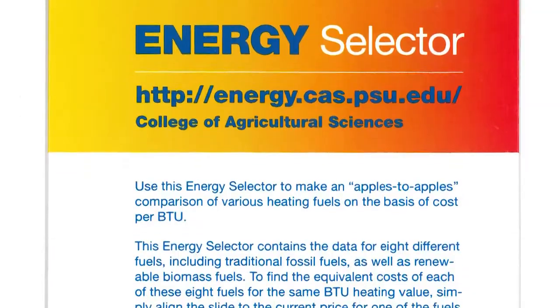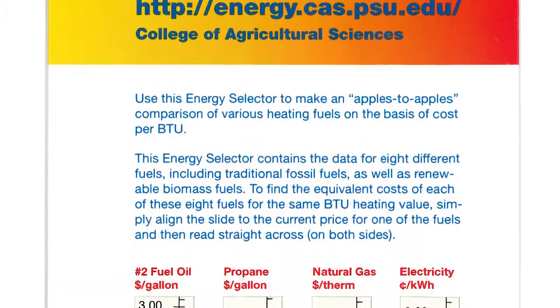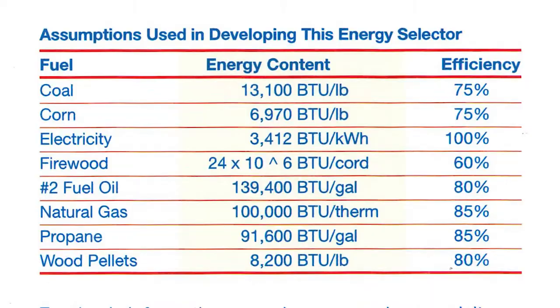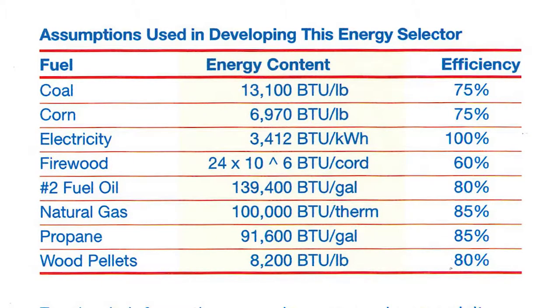Thankfully there's a simpler method, such as using this handy tool called an energy selector. This one is from Penn State Extension, but your local Extension office may have a similar device available. This tool automates the process of calculating the energy cost of different fuels, taking into account the different units in which it is sold, the different energy content of each fuel, and the typical efficiency with which it is used.